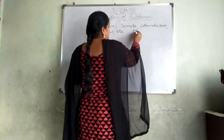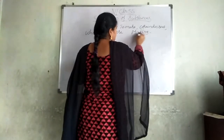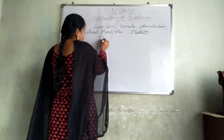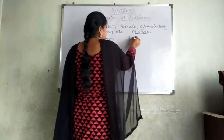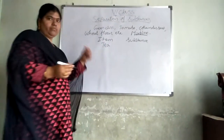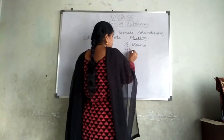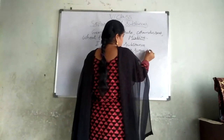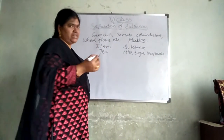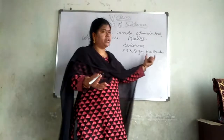Let us talk about the mixture. How will the substances be mixed? Suppose I want to prepare a tea. What are the substances required to prepare a tea? I need milk, sugar, and tea powder. If you want to prepare a tea, you can also add ginger. But basically, milk, sugar, and tea powder are important.